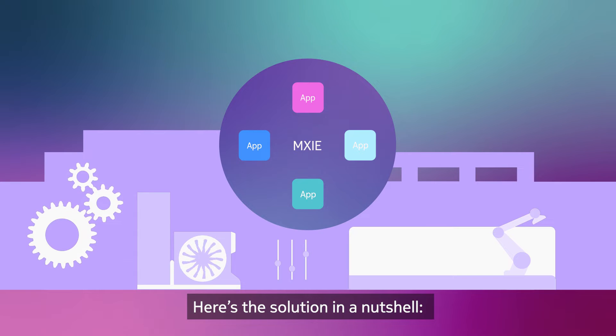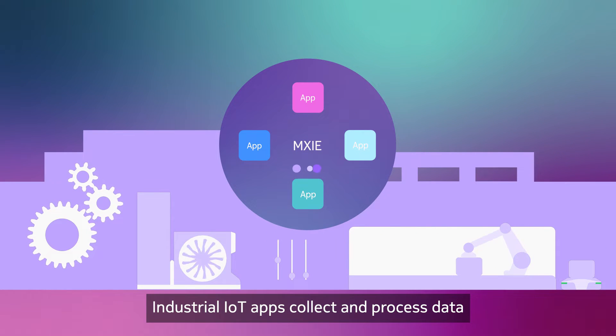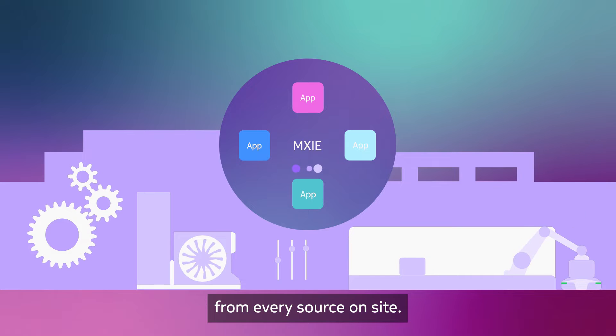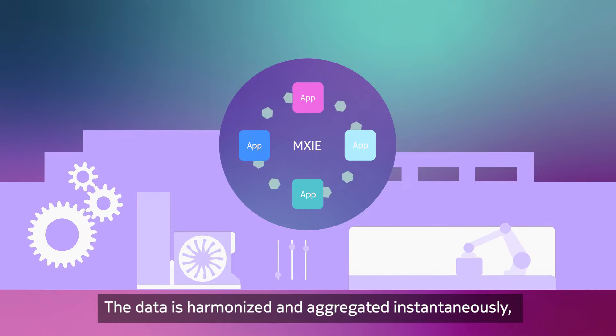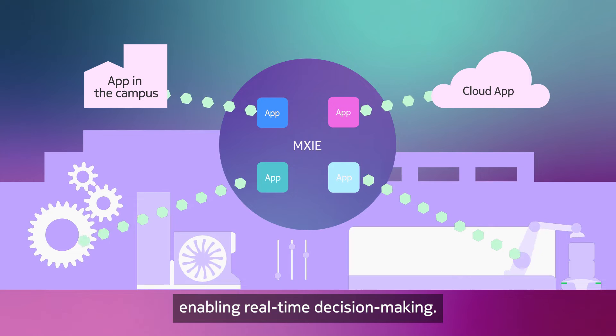Here's the solution in a nutshell. Industrial IoT apps collect and process data from every source on-site. The data is harmonized and aggregated instantaneously, enabling real-time decision-making.